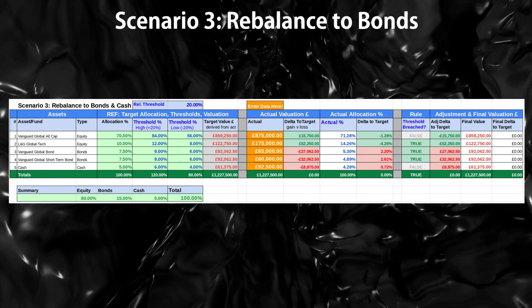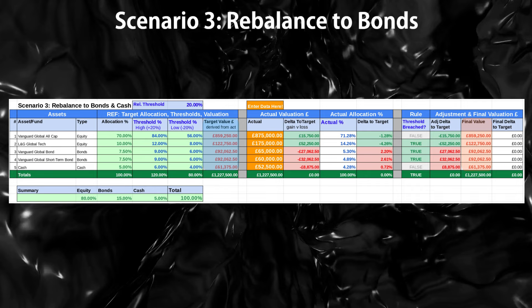Scenario 3 sees a strong year for tech stocks, which now comprises 14.3% of the portfolio, exceeding the high threshold of 12%. Global equities haven't done too badly either. The outperformance of tech stocks has resulted in both bond funds dropping below their low thresholds. Rebalancing results in selling outperforming tech stocks and some global equities to buy primarily bonds, preventing the portfolio allocation from being skewed. The final valuation for each asset aligns with the target valuation, as expected.